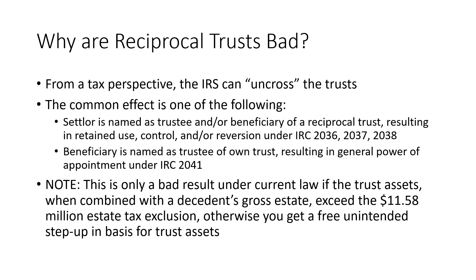Now, with the very high estate tax exemption amount, this is only a bad result under current law if the combined value of the decedent's gross estate before including the trust assets and the gross estate after including the trust assets would exceed the $11.58 million estate tax exclusion. Otherwise, there's no tax issue — you get a free, unintended step-up in basis for trust assets. So for estates being administered right now, it might be a good idea to look back and see if there's any argument you can make on an estate tax return that there are reciprocal trusts, because that could give you a free step-up in basis without causing any estate tax liability under current law.